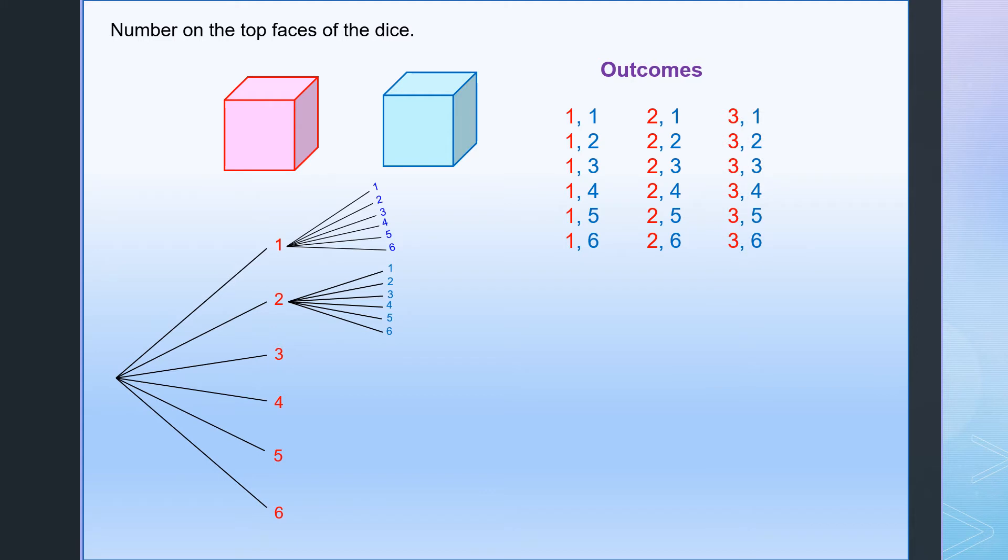Similarly, if that is 3, 4, 5, or 6. So how many outcomes can we get on the top faces of the two dice? So we have 6 lots of 6. We have 36 outcomes.